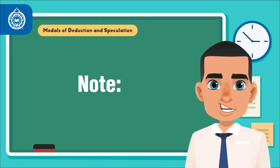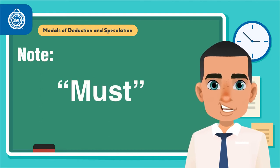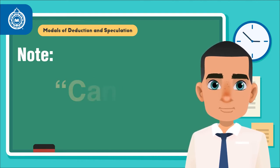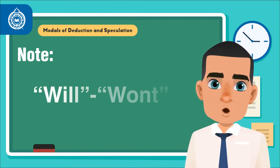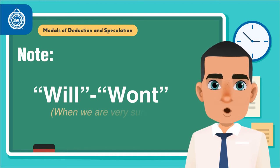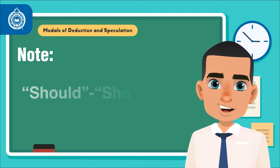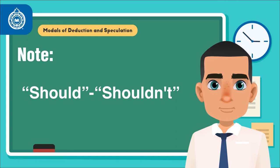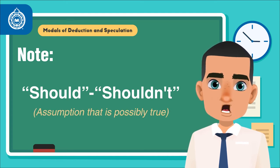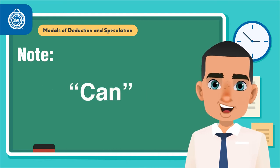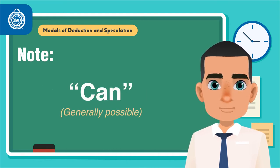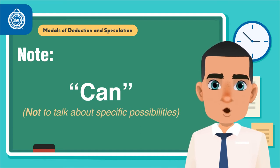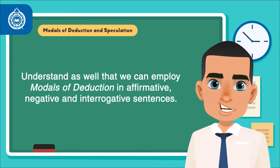As a note, please understand that in this scenario, the opposite of must is can't. We use will or won't when we are very sure. We use should or shouldn't to make an assumption that is possibly true. We use can when something is generally possible. We do not use can to talk about specific possibilities. Understand as well that we can employ these modals of deduction in affirmative, negative, and interrogative sentences.